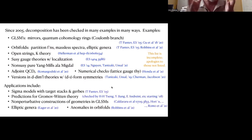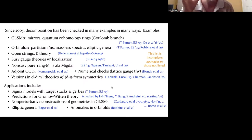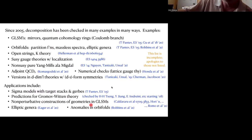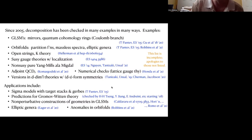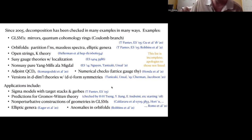Before getting into the meat of the talk, let me briefly mention the applications. For my mind, the original application was to make sense of sigma models on stacks. This made predictions for Gromov-Witten theory. My favorite application is to non-perturbative constructions of geometries in gauge linear sigma models — it's now a standard trick in the GLSM community for building geometries not just as the critical locus of a superpotential. It's been applied to elliptic genera, to check statements about IR limits of pure gauge theories in two dimensions, and also to understand anomalies in orbifolds and the Wang-Wen-Witten anomaly resolution mechanism.